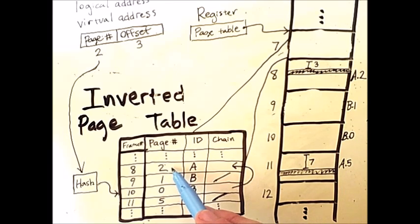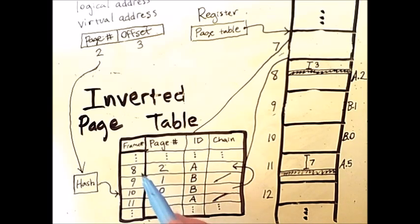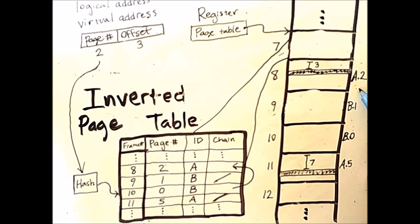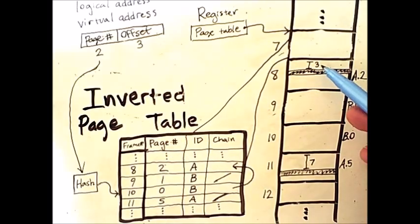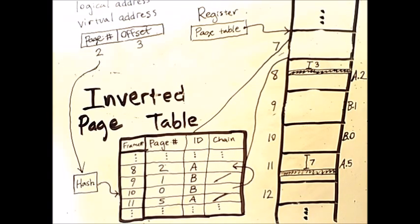So the actual frame I am looking for is frame 8. So I will go to frame 8 here, and sure enough that is where page A2 is. Now I can use my offset from the virtual address to find the actual physical address that I want in memory. Note that if I ever reach the end of a chain, and still do not find the page and process I am looking for, it means that that particular page is not currently loaded into main memory, and must therefore be retrieved from disk. This is yet another way that paging can be used in conjunction with virtual memory.